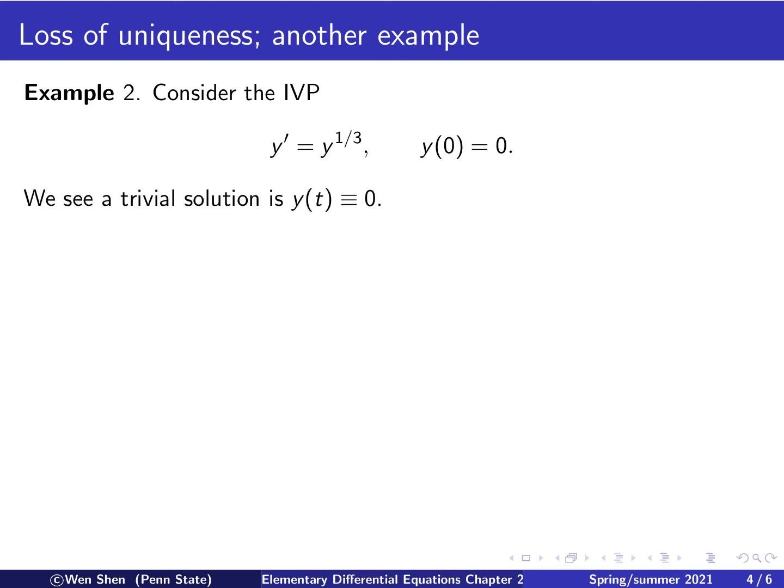We can study the direction field, and we see that when y equals zero initially, then y prime equals zero. And therefore, y equals zero as a constant is a solution. We usually call this solution trivial because it's identically zero and makes everything automatically satisfied.